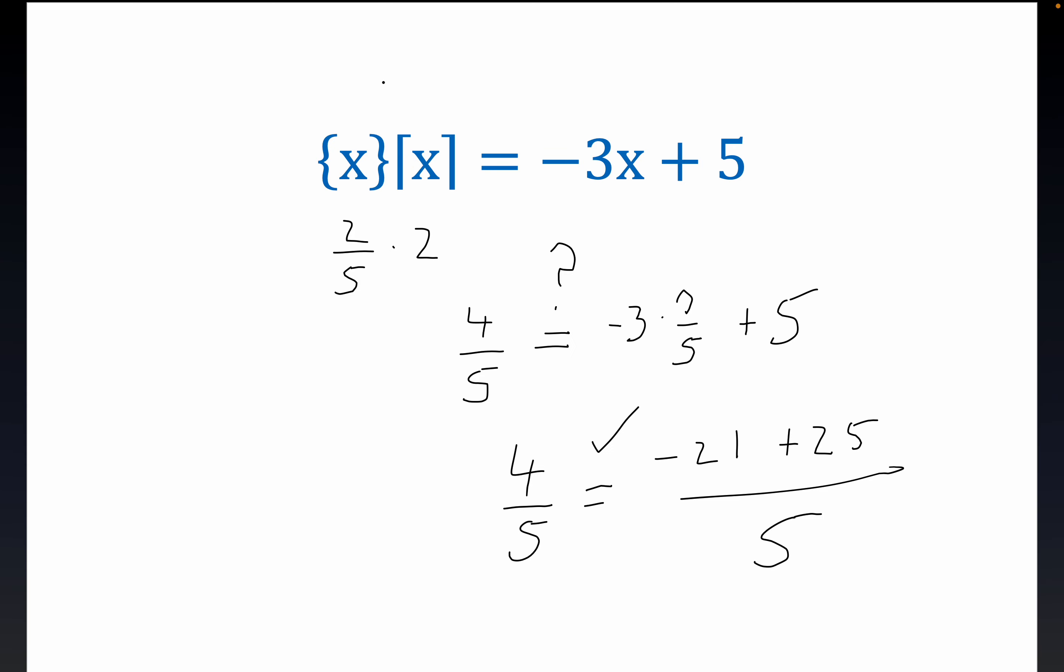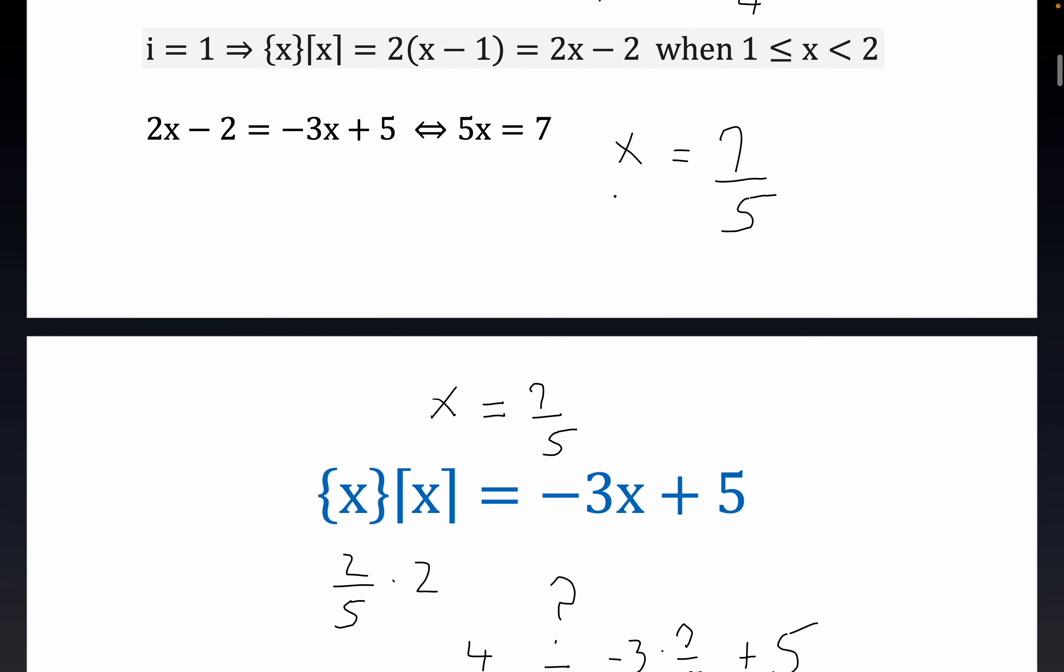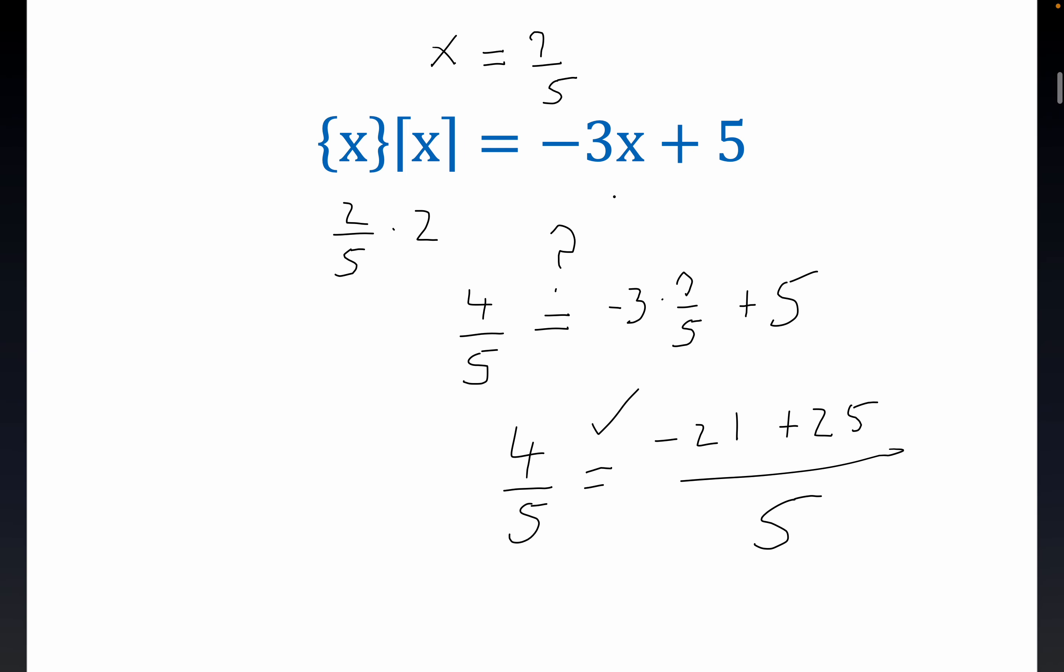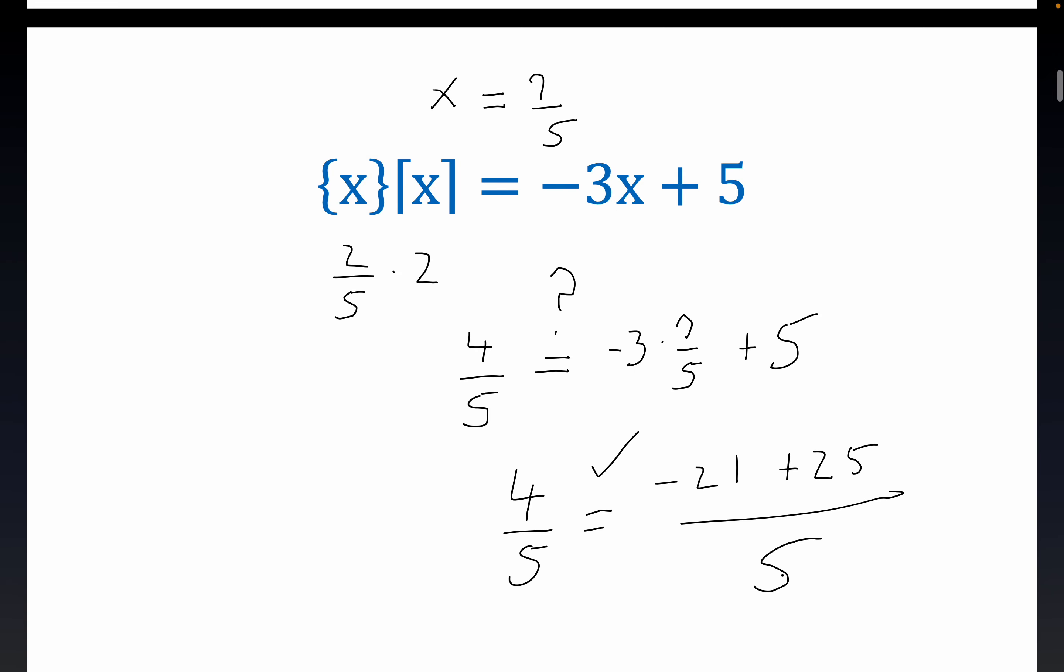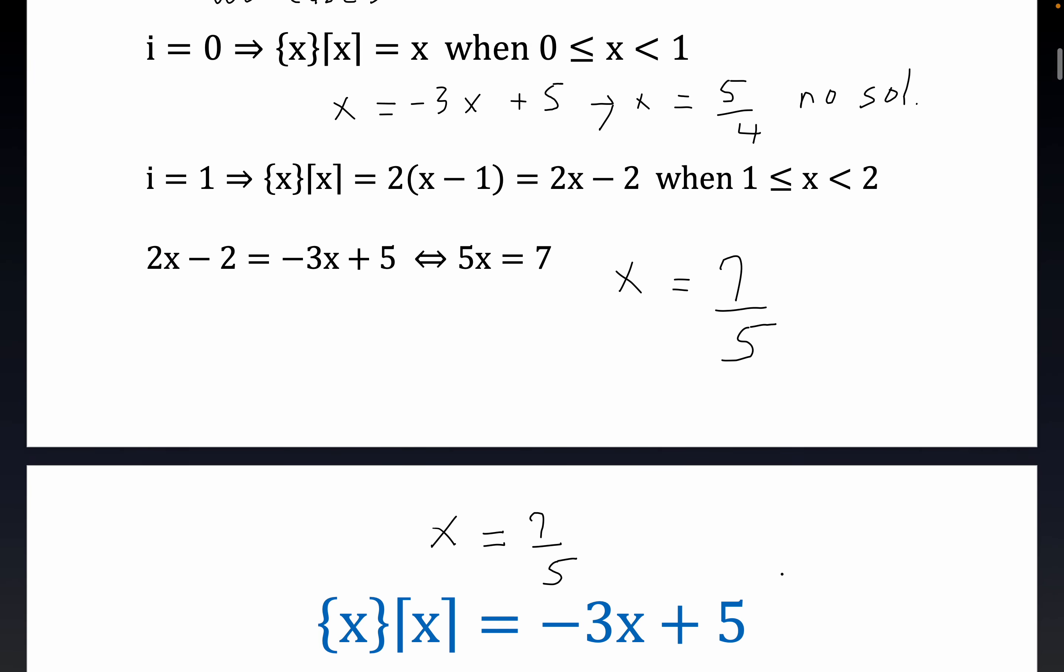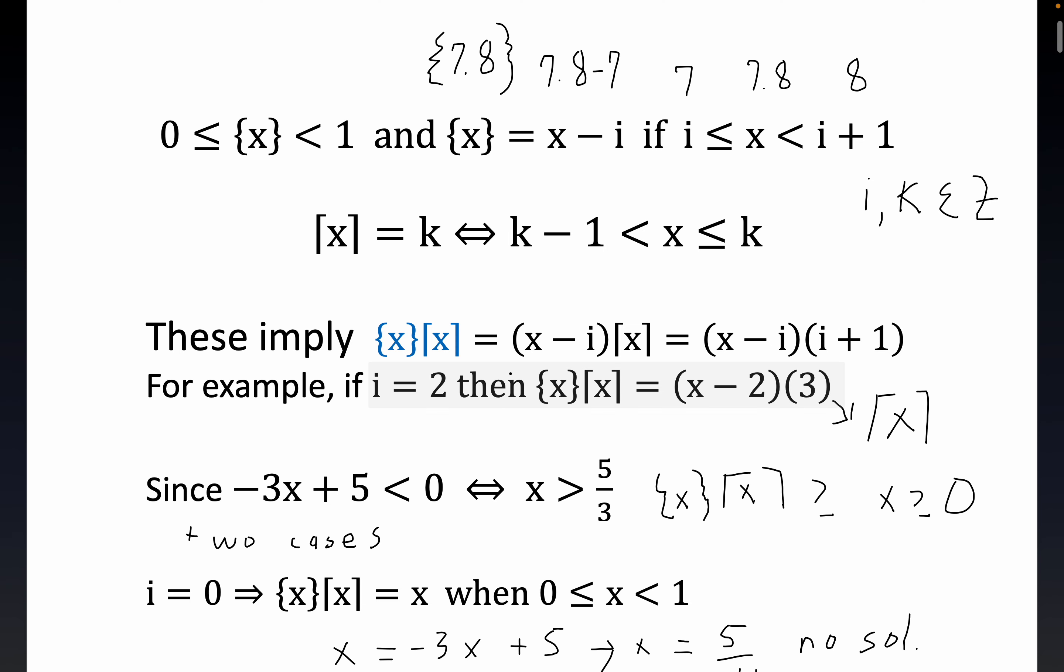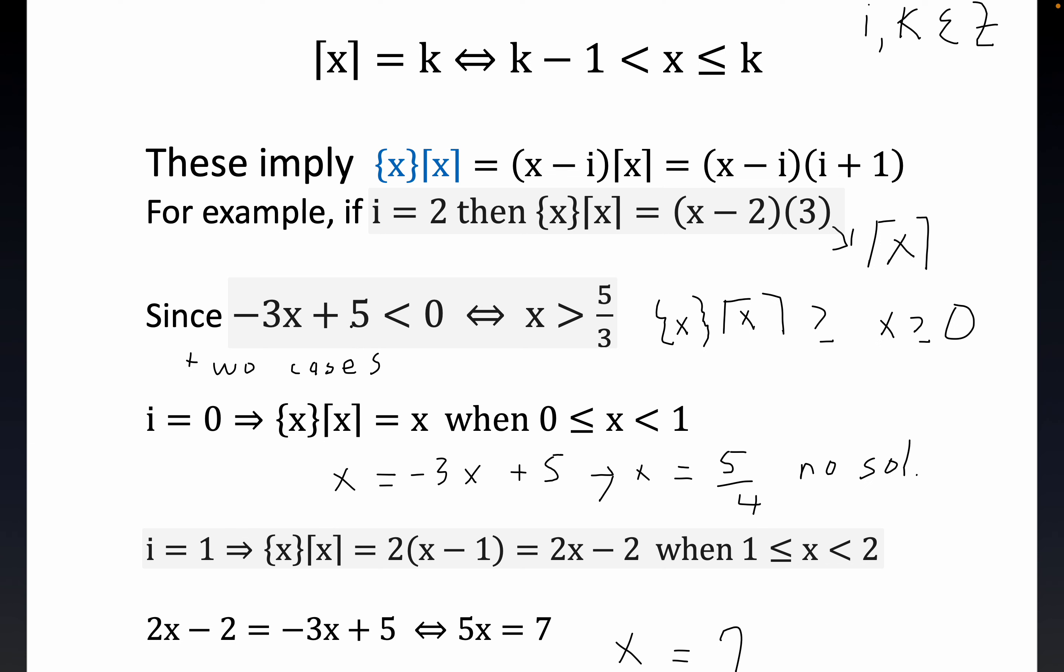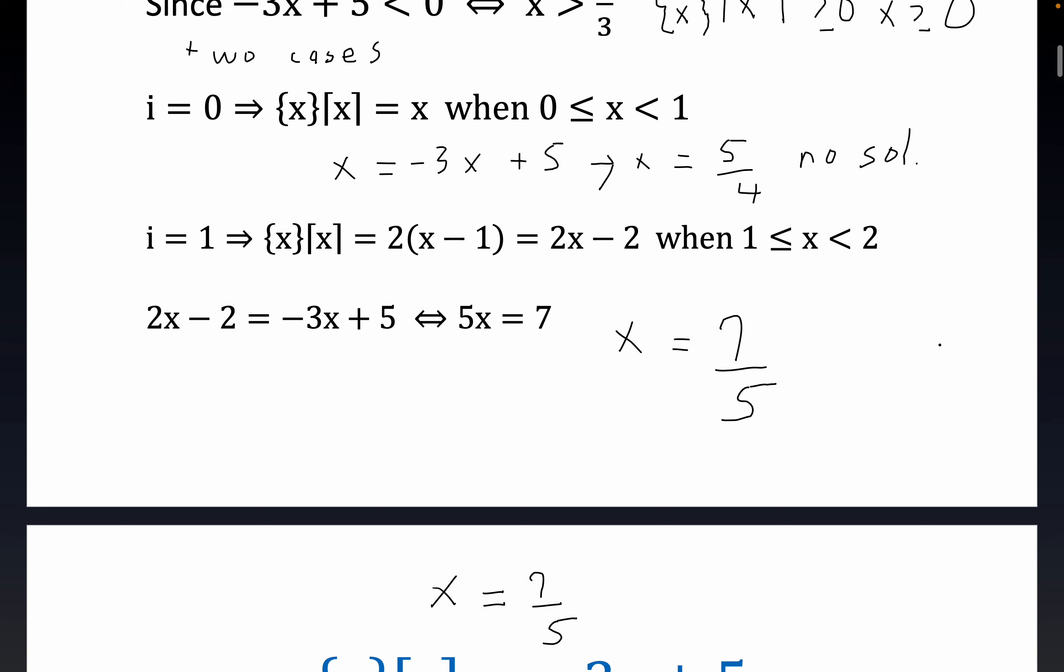So it did work when we substituted x equals 7 fifths. Remember, we got x is equal to 7 fifths from the work above. See, we got x equals 7 fifths as a candidate solution, and it checks out. We get, when we substitute 7 fifths on both sides, we get 4 fifths equals 4 fifths. So it does work. It's the only solution because of what we said earlier about this linear function. This linear function becomes negative once you're to the right of 5 thirds, but we know our object is greater than or equal to 0 when x is greater than or equal to 0. So that does it. x is equal to 7 fifths is the solution. And I hope you enjoyed viewing that.